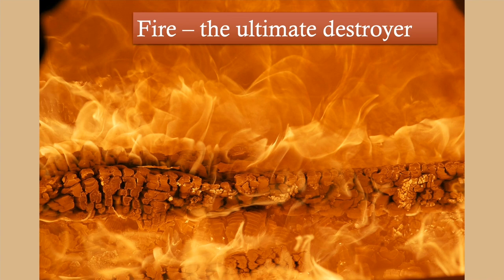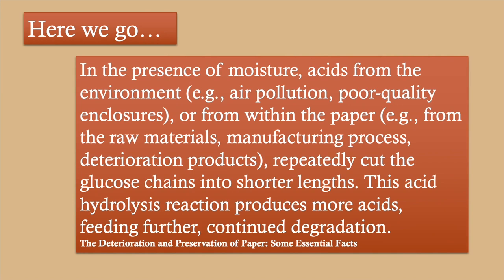Here's a quote from the Library of Congress article on the deterioration and preservation of paper: 'In the presence of moisture, acids from the environment, from air pollution, poor quality enclosures, or from within the paper — from raw materials, manufacturing process, deterioration products — repeatedly cut the glucose chains, which are the fibers, into shorter lengths. This acid hydrolysis reaction produces more acids, feeding further and continuing the degradation.' You're trying to establish the optimal way to preserve paper and not put it in a situation where it continues to self-destruct.